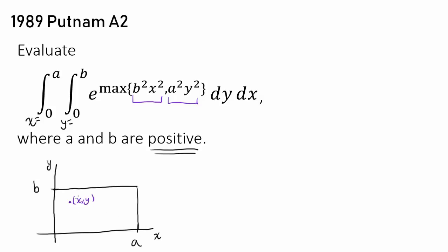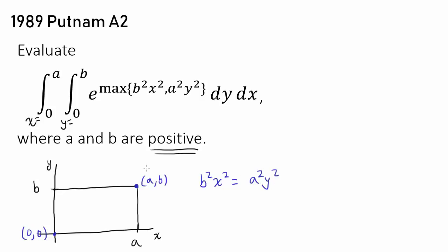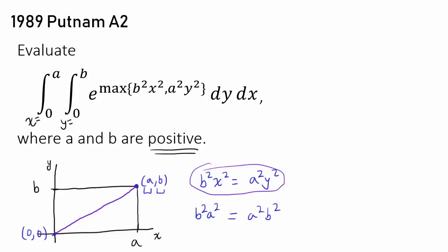At the origin (0, 0), b squared x squared equals a squared y squared since both are zero. And at the corner point (a, b), b squared x squared equals b squared a squared and a squared y squared equals a squared b squared — so they are equal here too. Maybe for every point on the line connecting (0,0) and (a, b), b squared x squared equals a squared y squared.